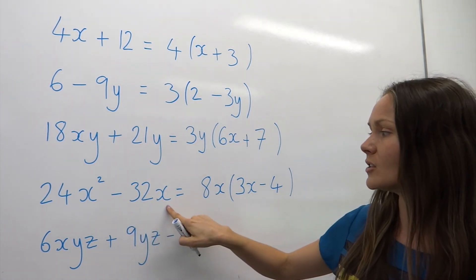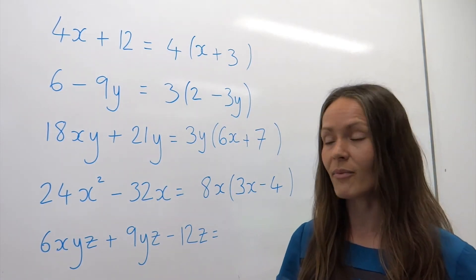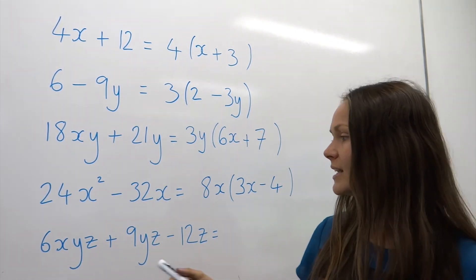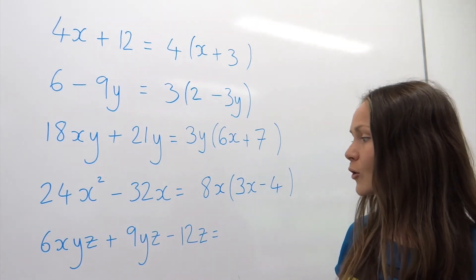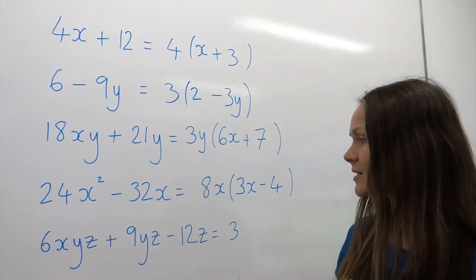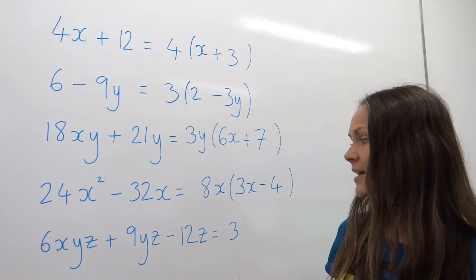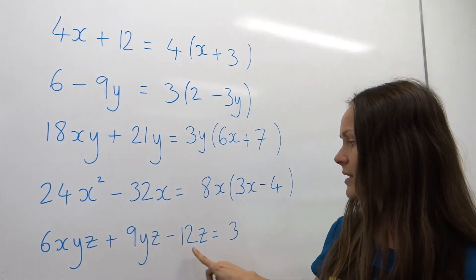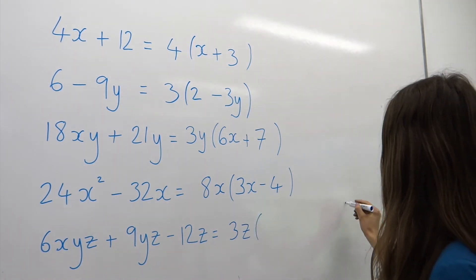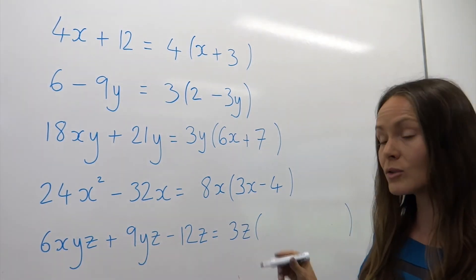The last one looks a bit harder but it really isn't — we've still got one single set of brackets. This time we need to see what's common in all three terms. The common factor in 6, 9, and 12 is 3, as it's the only factor that fits exactly into all three apart from 1, but we need the highest one. There's also a common letter: z appears in each term, so write down 3z. Now that I've taken out everything that's common, I can open up my brackets.